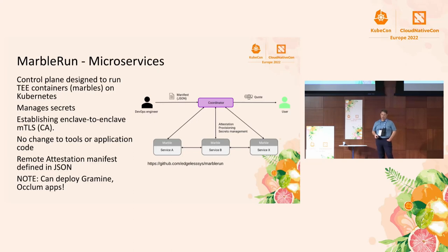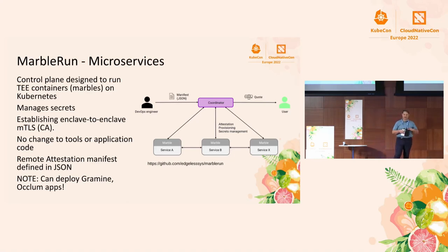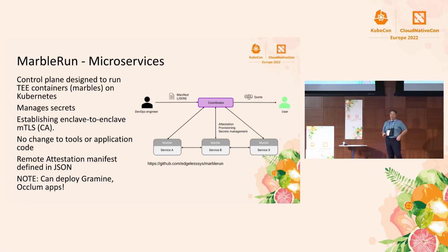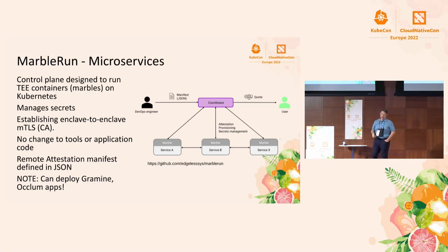Another approach is Marble Run. They take the microservices approach, giving you much more functionality around managing secrets and attestation. You're defining YAML or JSON, just like any other microservices infrastructure — no code changes required, no special tooling required — and they can deploy Grameen and Aklam apps as well. It's a nice stack, but the biggest concern is that you've added even more convenience and functionality, and even more to your TCB. You really need to think through whether you trust all that code providing your infrastructure.